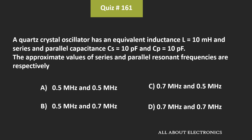In this question, we have been given that for the quartz crystal oscillator, the equivalent inductance is equal to 10 mH, while the series and the parallel capacitance are 10 pF. And we have been asked to find the approximate values of the series as well as the parallel resonant frequencies.